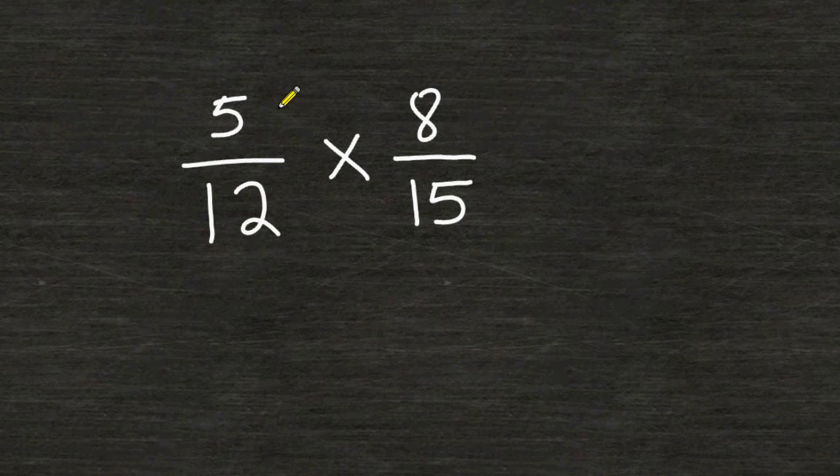So 5 and 15 share a common factor of 5, so we can reduce the fraction 5 over 15 to 1/3 because 5 goes into 5 once and 5 fits into 15 exactly 3 times.